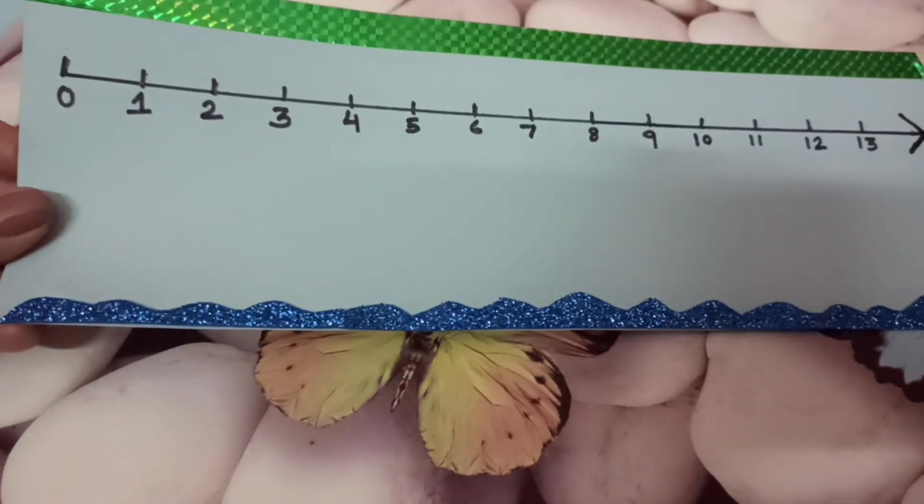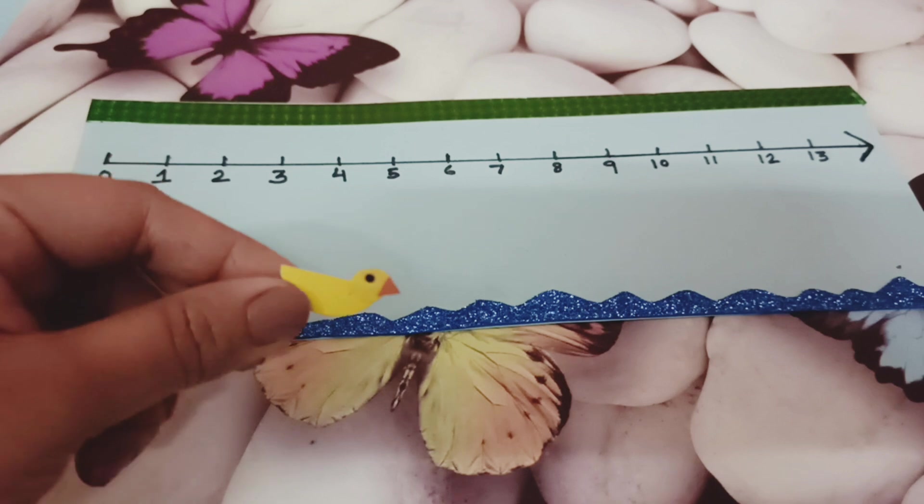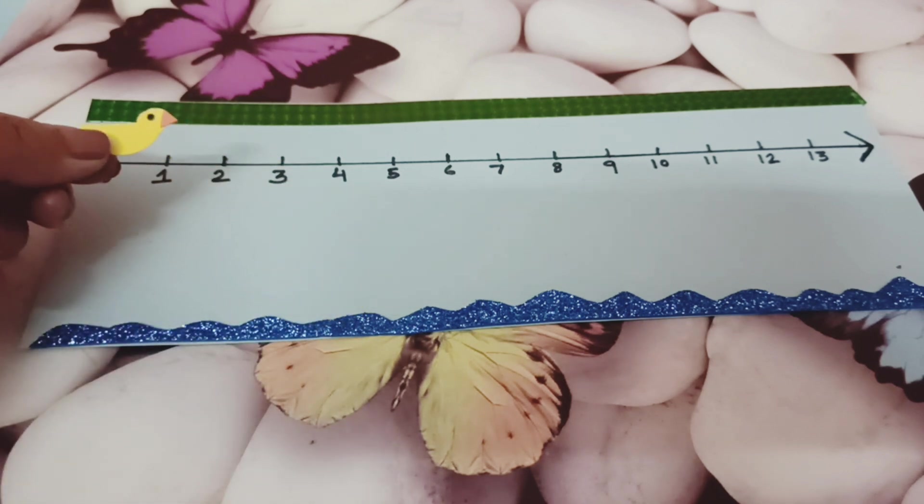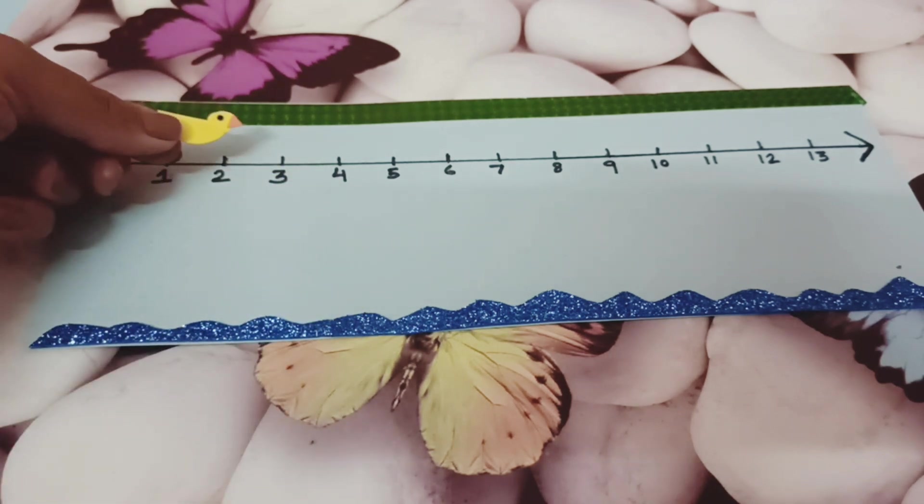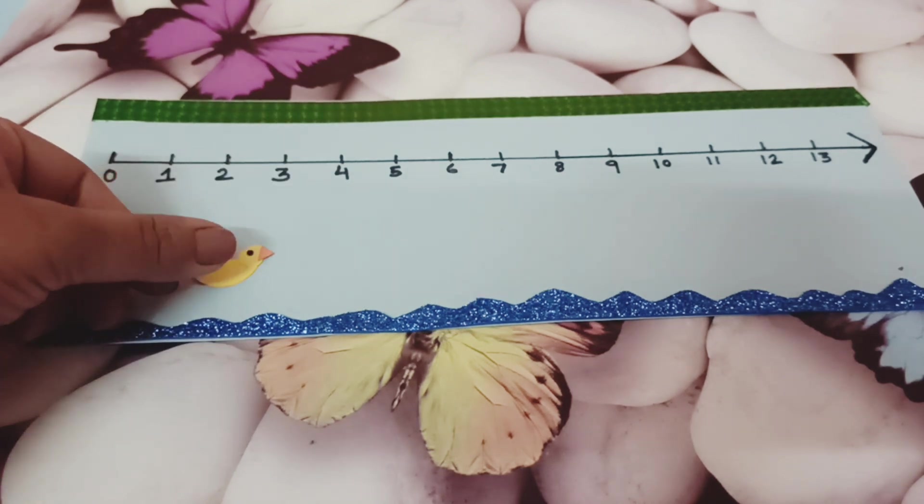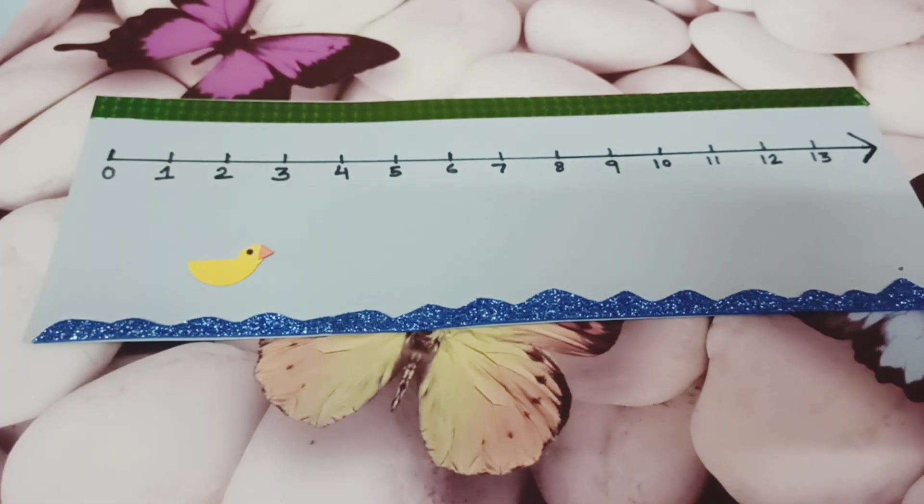Decoration is completely optional. Now here I have made a paper duck, a small paper duck. You can also make car or dolphin or fish, whatever your student or children like.